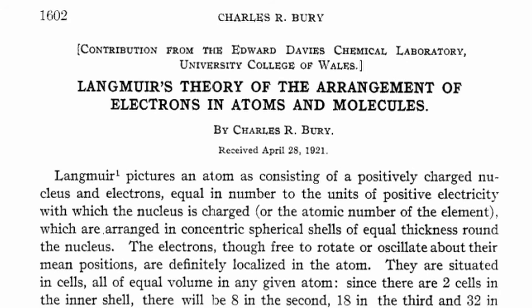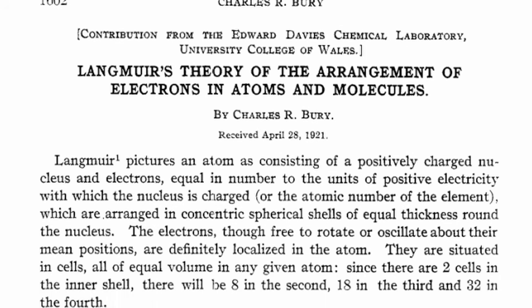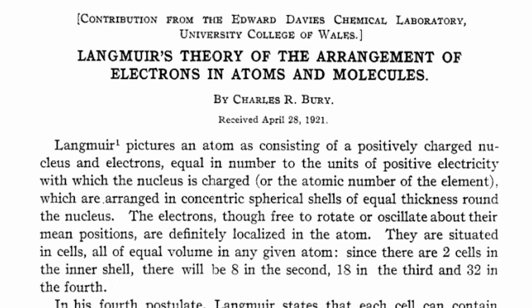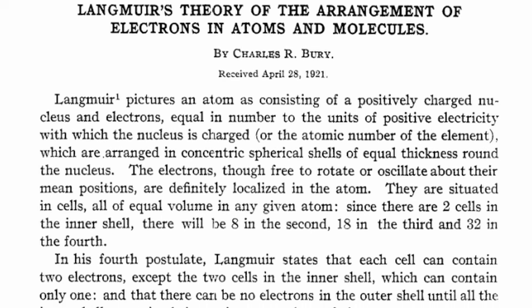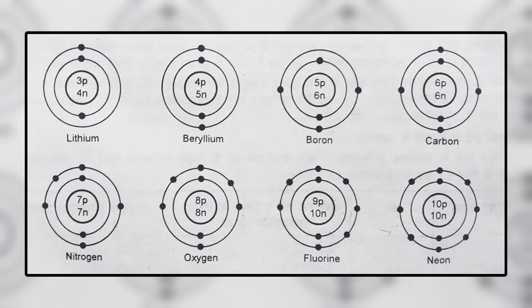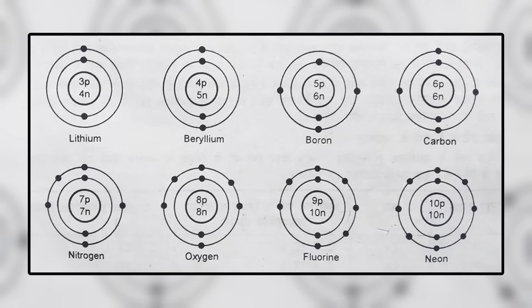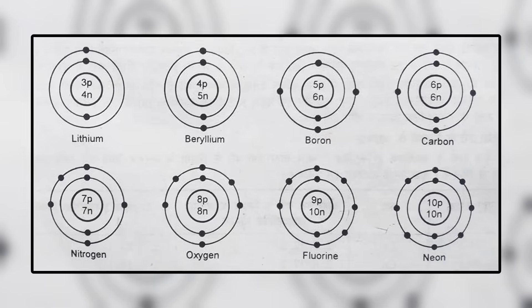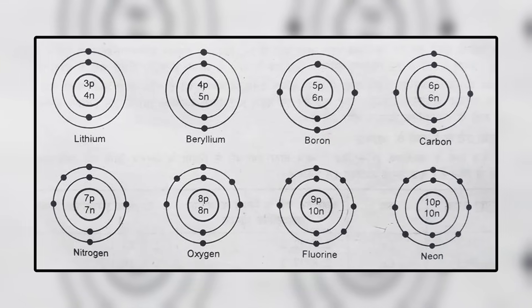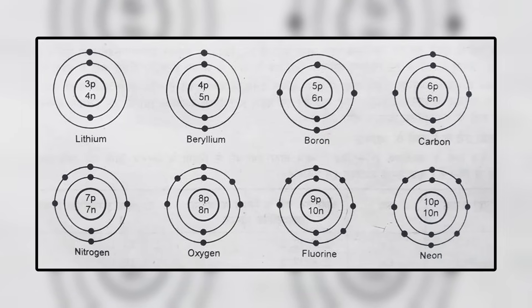In 1921, English chemist Charles Rugeley Bury proposed the addition of a new group of elements to the periodic table based on his model of the atom, which was very similar to that of renowned physicist Niels Bohr. In fact, some textbooks in the early 20th century labeled this model the Bohr-Bury model, but this has unfortunately been lost to time.